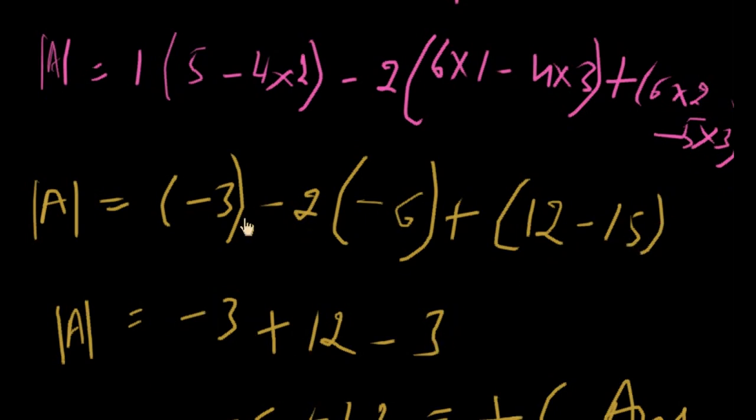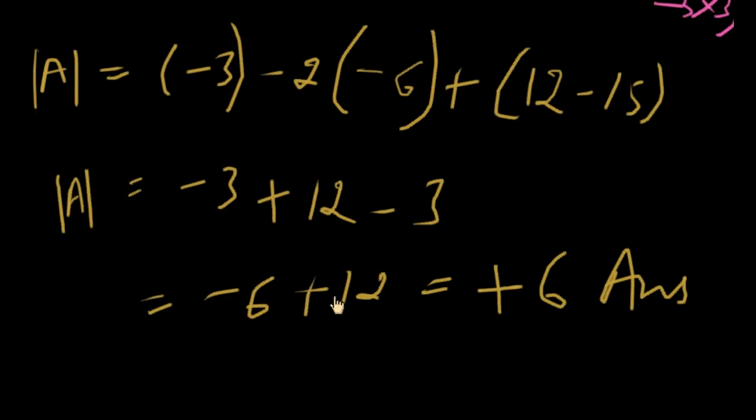Minus 3, minus minus plus 6. 6 multiply with 2, 12. 15 minus 12, minus 3. 12 minus 6 will be plus 6. That is our answer.